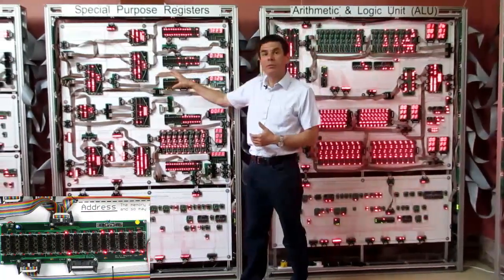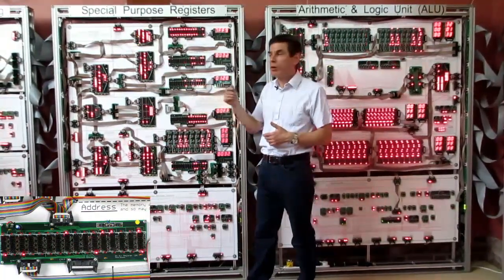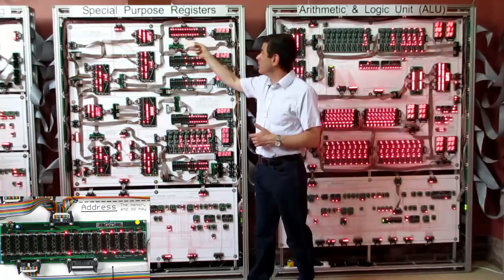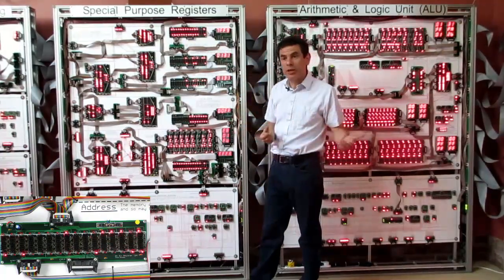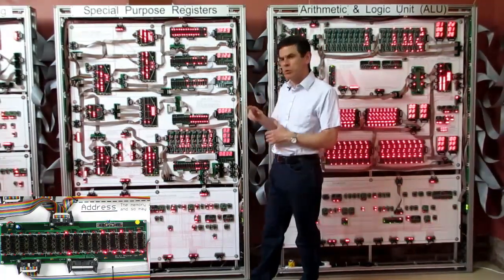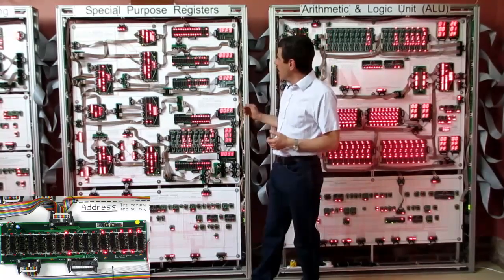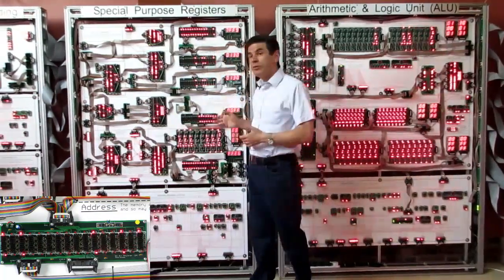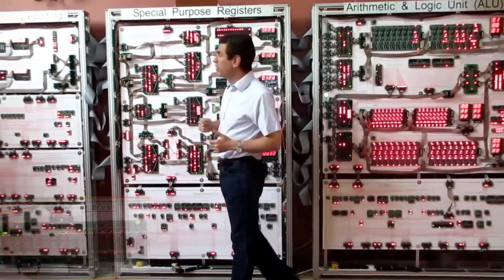For example, we have the program counter which keeps track of where you are in a program, a stack pointer which also helps in keeping track of where you are in the program and helps with some data flow, and then there's some registers for looking at where we are writing to in memory.